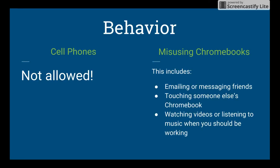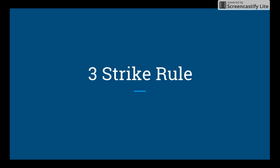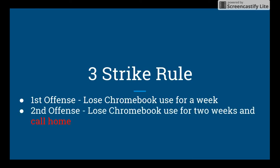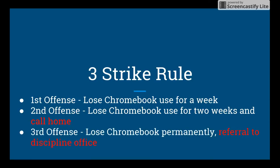If you break any of these rules, we go into the three-strike rule. On the first offense, you will lose Chromebook privileges for a week — you'll become a paper person. If I catch you a second time, you lose Chromebook use for two weeks and I will call home. On the third offense, you will lose Chromebook use permanently and receive a referral to the discipline office.